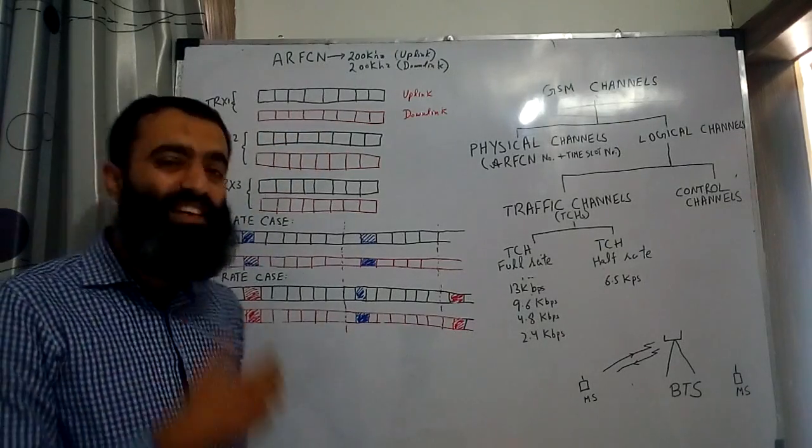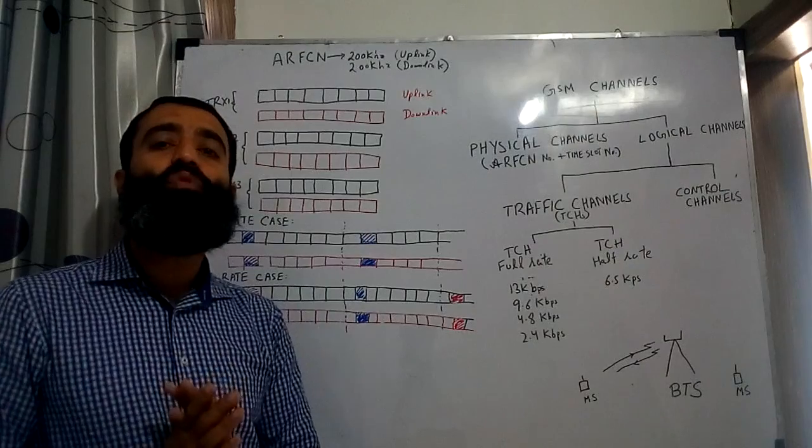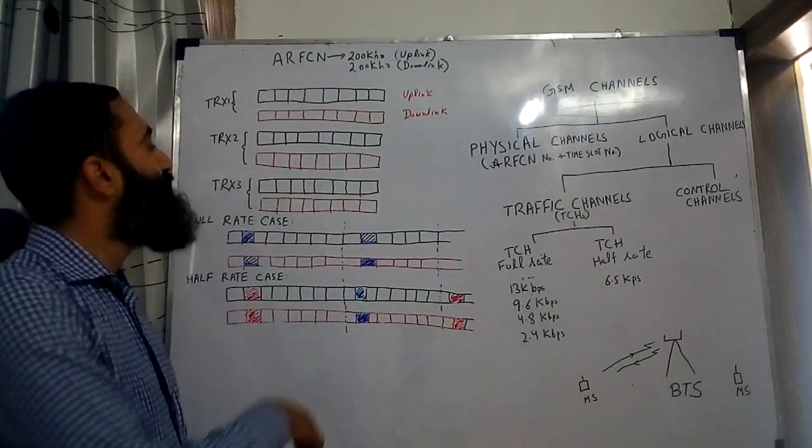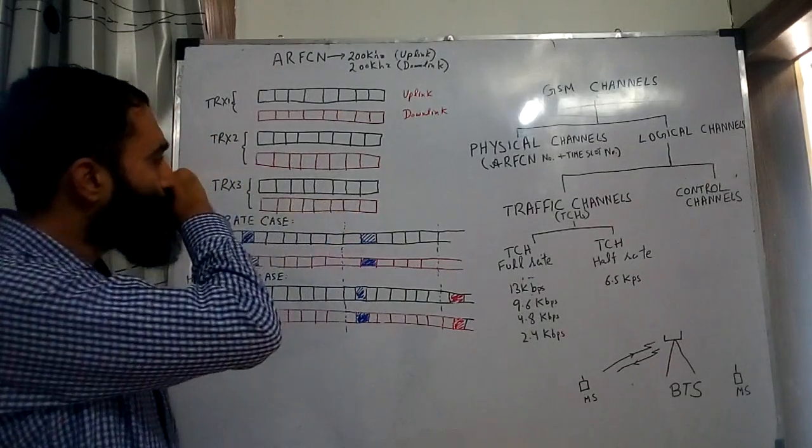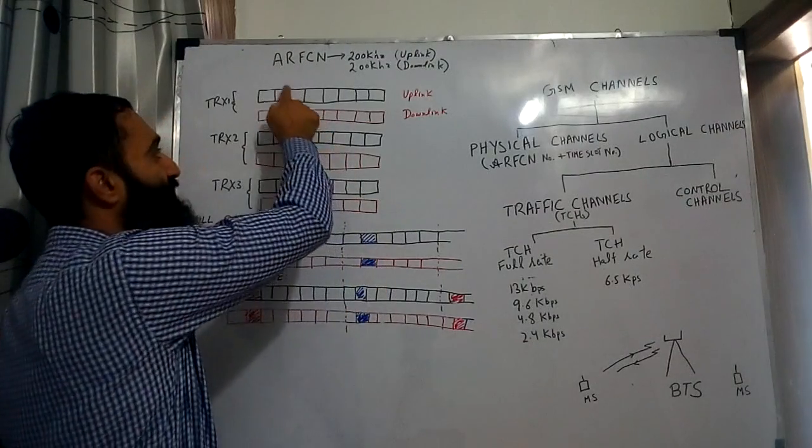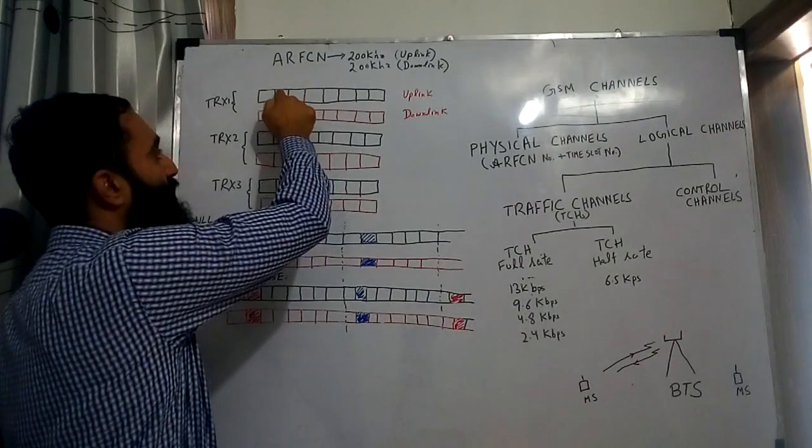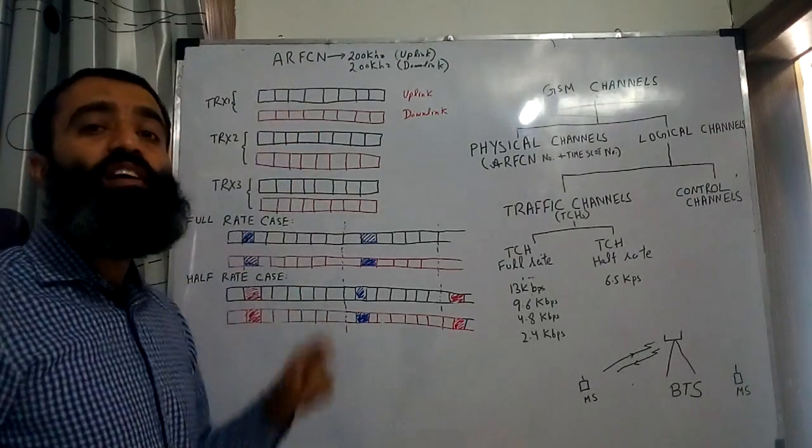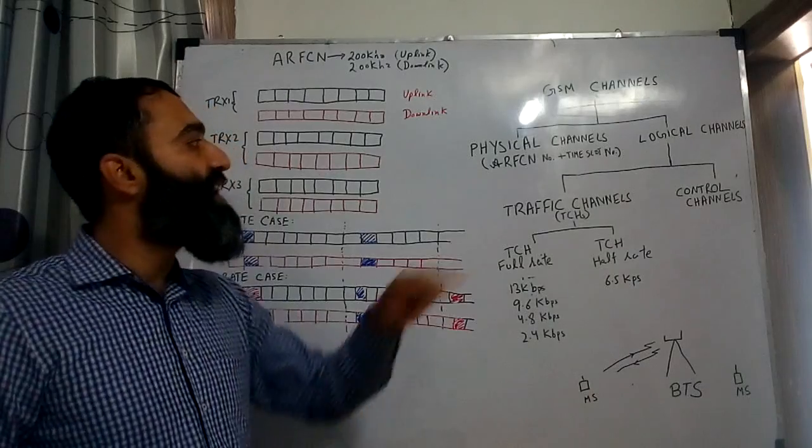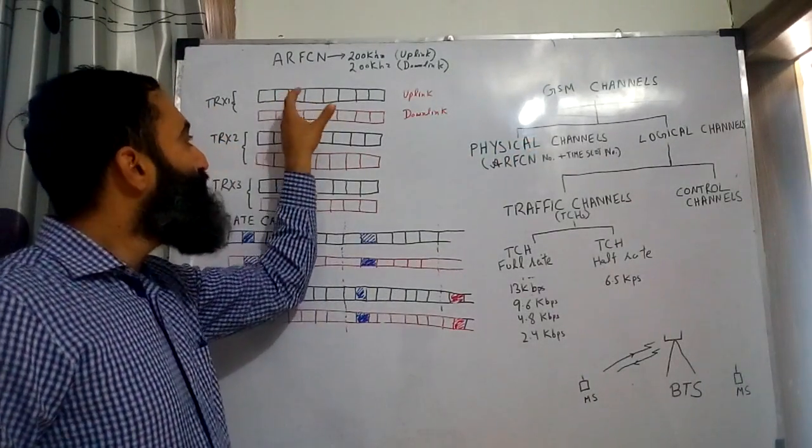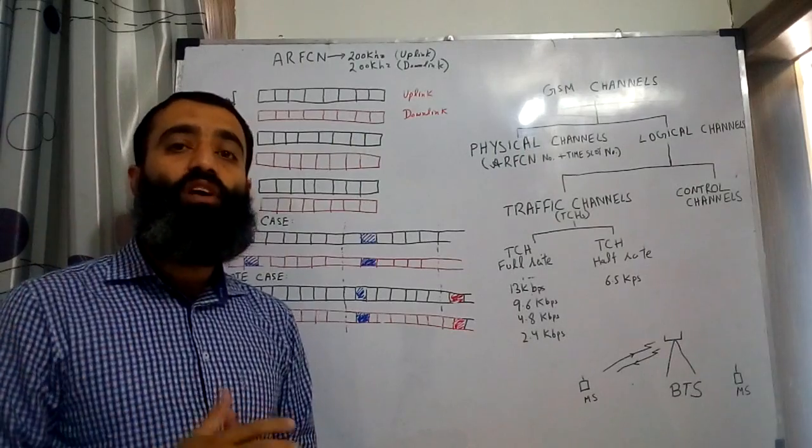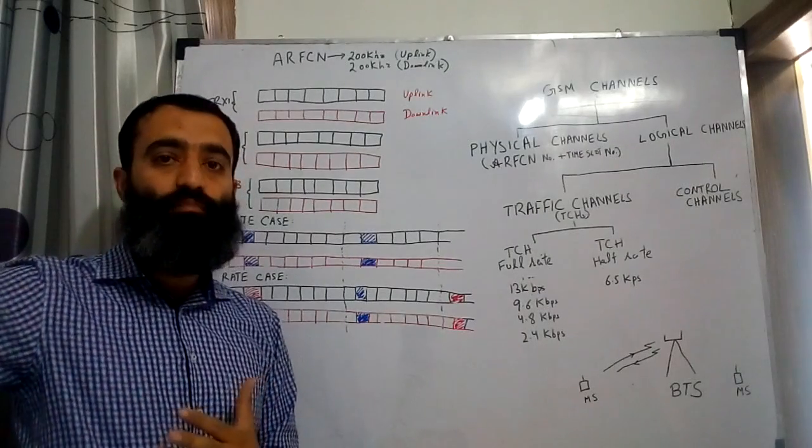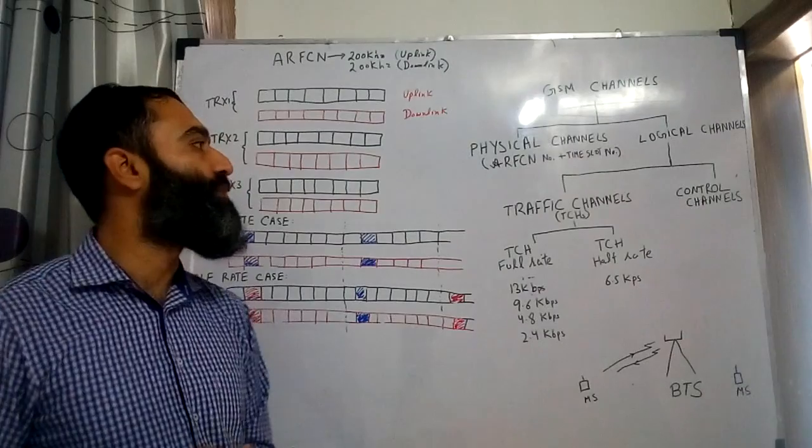Now these frequencies are further subdivided into a frame of 8 time slots. For example, if I take time slot number 2, then its ARFCN number plus its time slot number will identify it as a physical channel. So each of these time slots is a physical channel which is characterized by its ARFCN number and its time slot number.